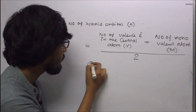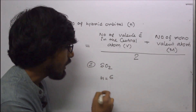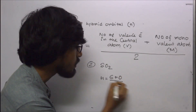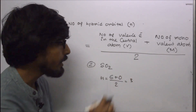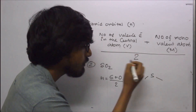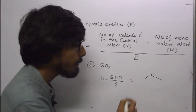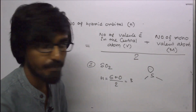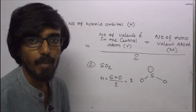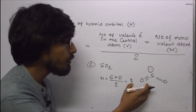For SO2: number of hybrid orbitals = (valence electrons of sulfur + monovalent atoms) ÷ 2 = (6 + 0) ÷ 2 = 3. Hybridization of sulfur is sp2. Two oxygen atoms are attached to sulfur, giving 2 bond pairs and 1 lone pair. Oxygen is bivalent and forms double bonds with sulfur. The shape of SO2 is angular (bent).